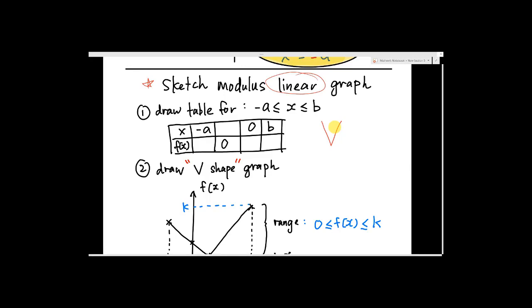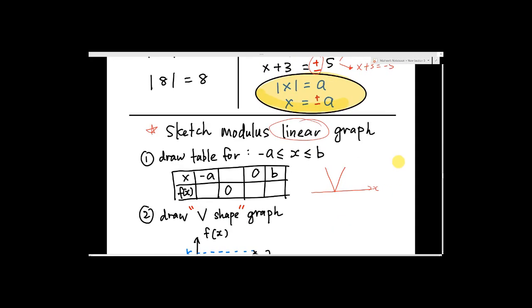The line will always look like V, and the vertex of the V must always touch on the X axis. This is something you always need to remember: first, always the V shape.